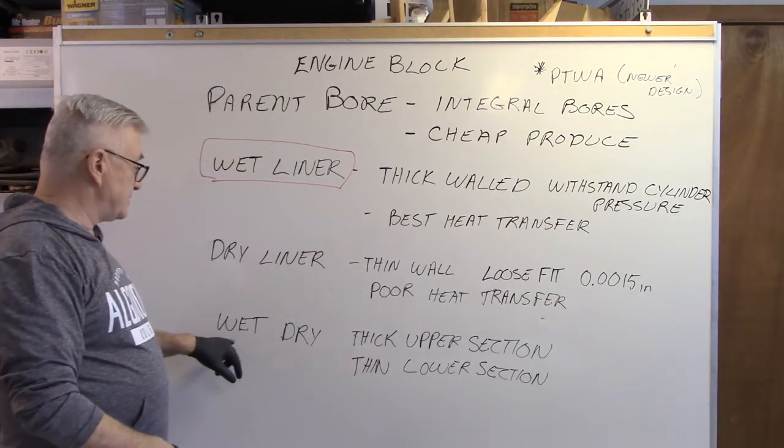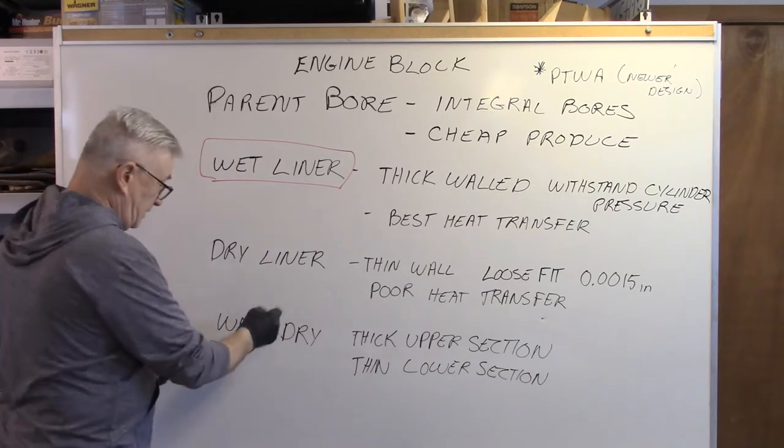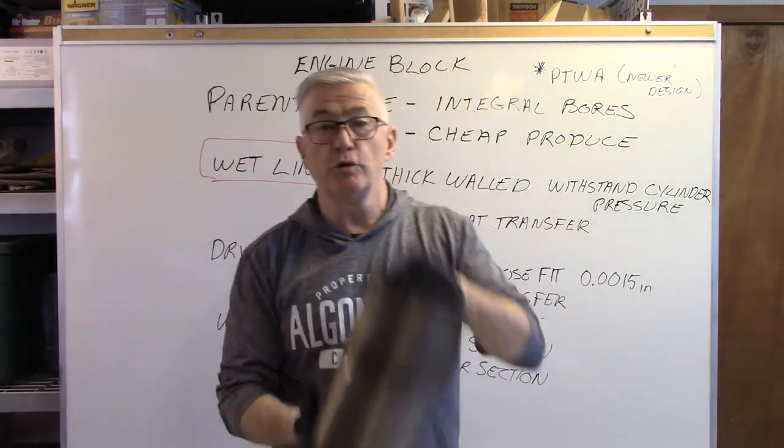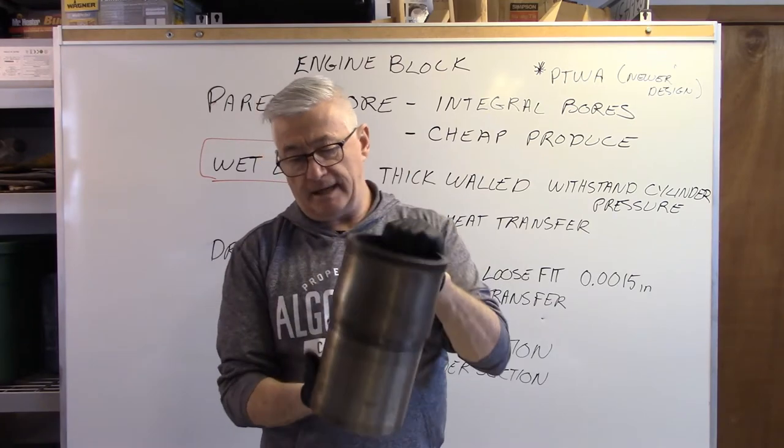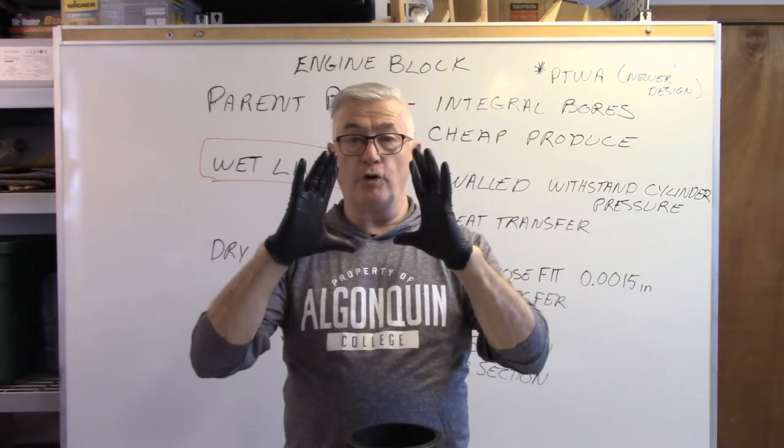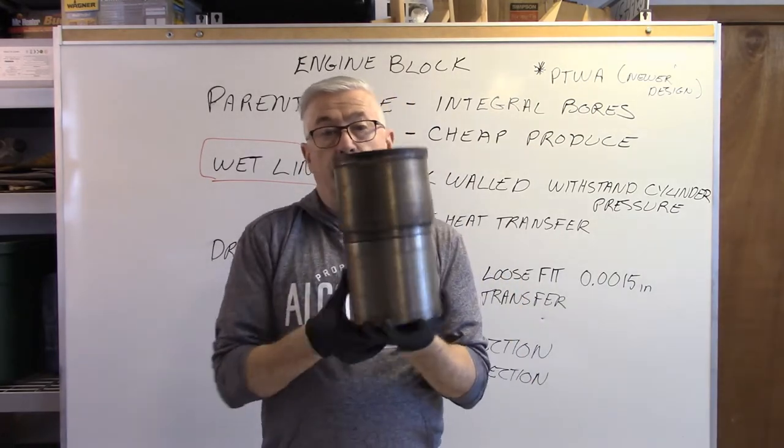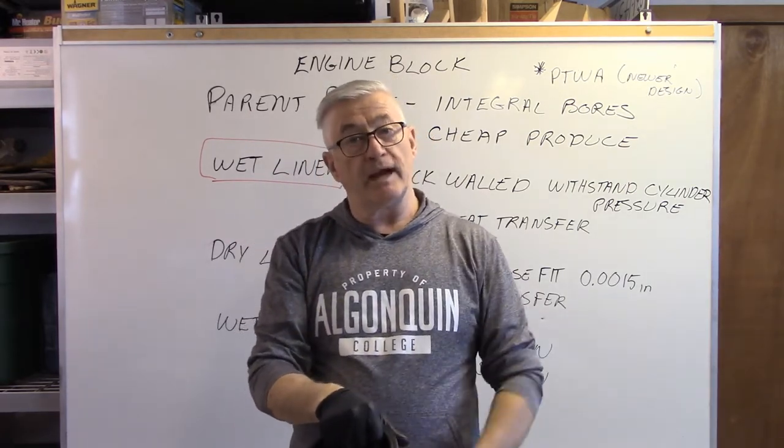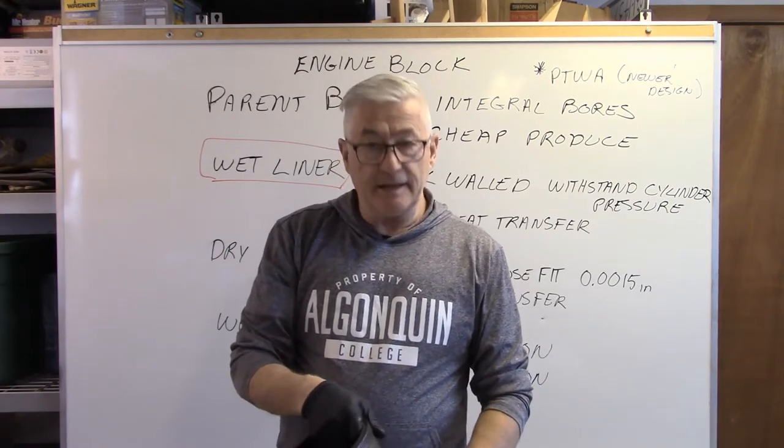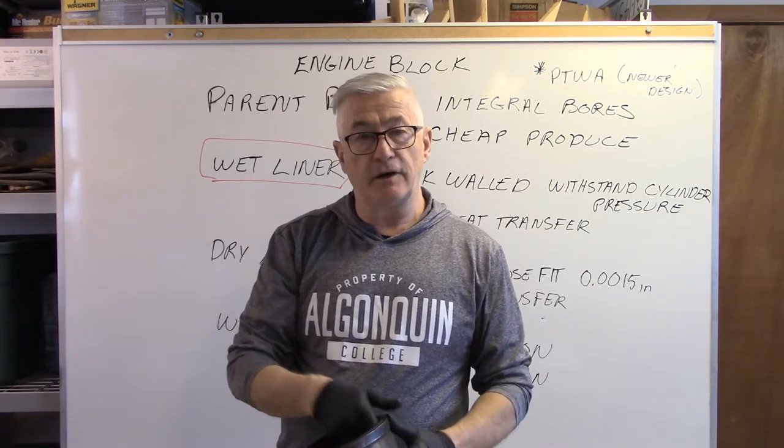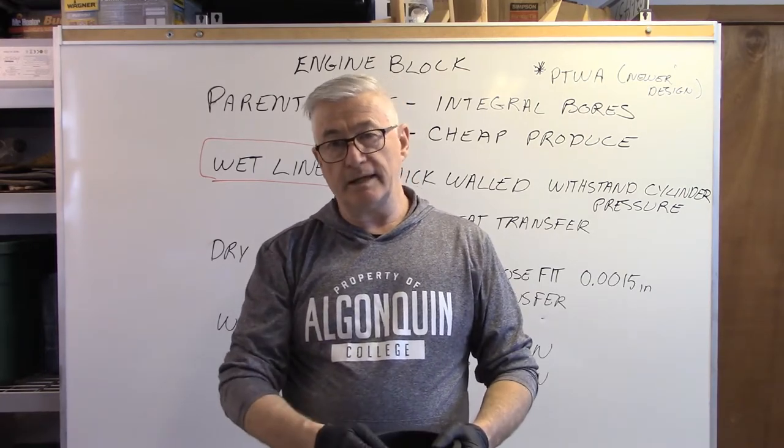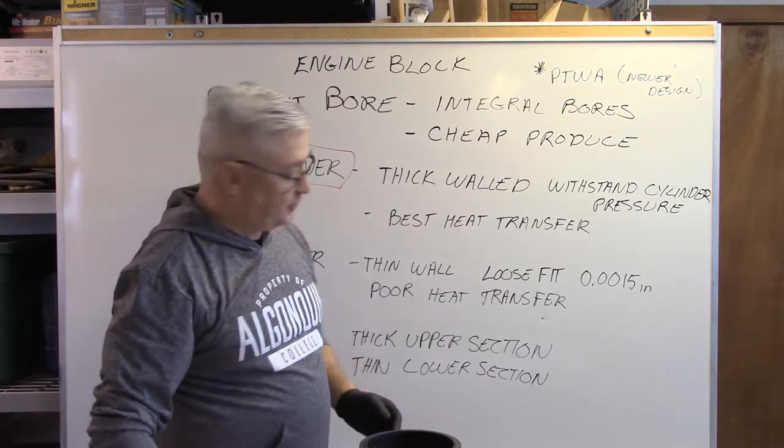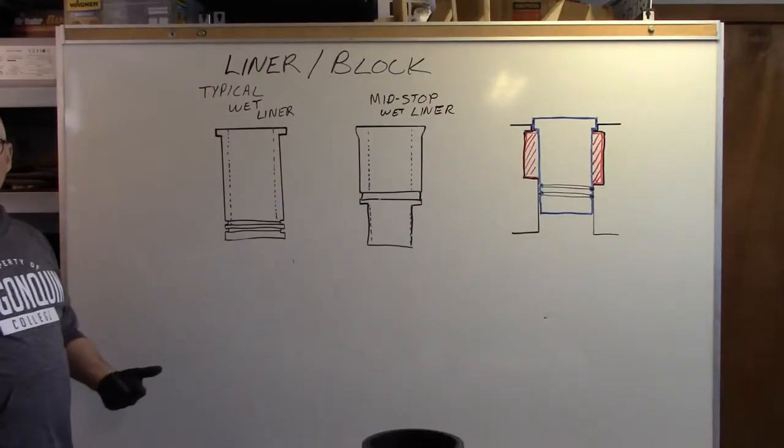The last one we have down here is a combination of wet dry liner. The wet dry liner is very similar to this but this is actually not a true wet dry liner and we will describe it. But a wet dry liner has a thick portion on the top where the combustion is going to happen and then on the lower section because there is no combustion forcing out on that they simply don't beef it up and make it as thick so it's very thin and we are able to use less material which makes it a little lighter and a little cheaper to produce.